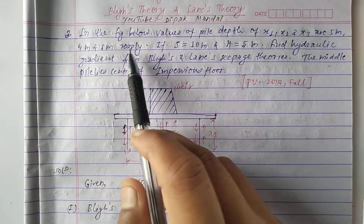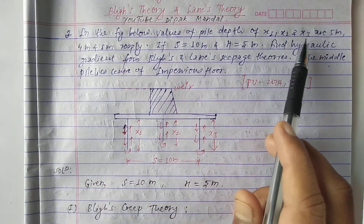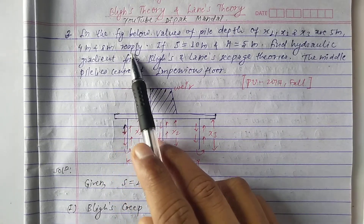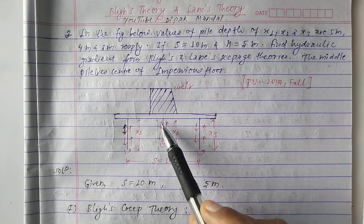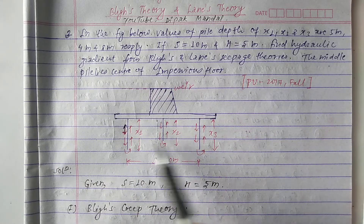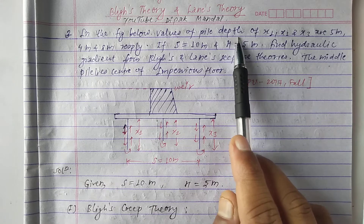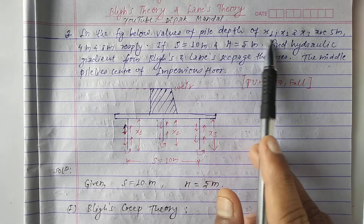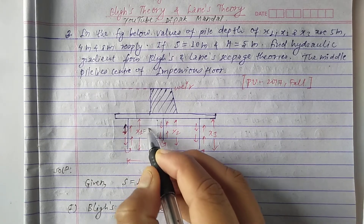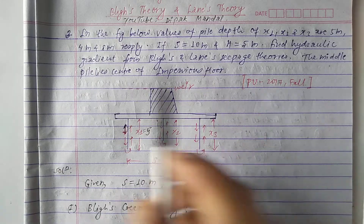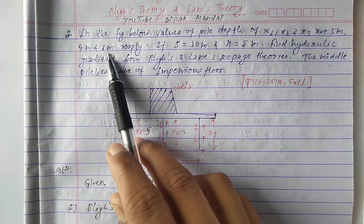In the given figure below, we have three piles. The depth values of x1, x2, and x3 are given. The first pile, the middle pile, and the last pile are shown. The depth of x1 is 5 meters, x2 is 4 meters, and x3 is 8 meters.